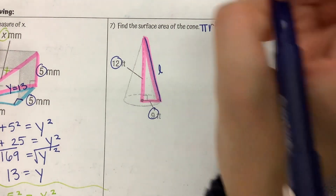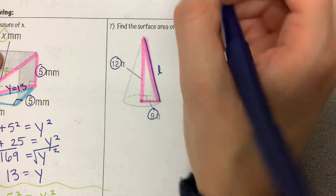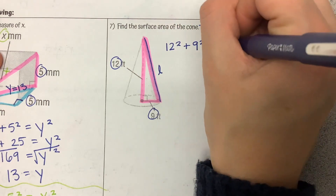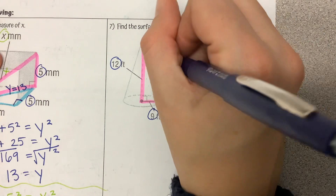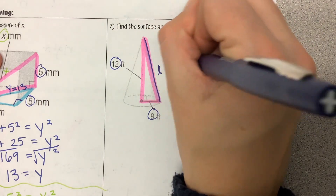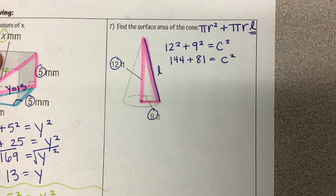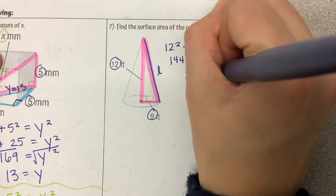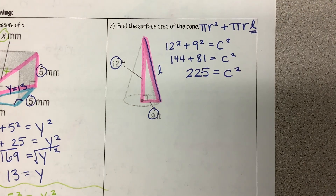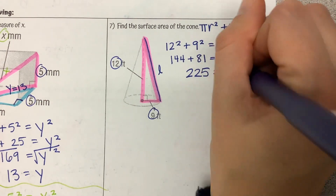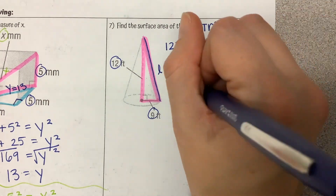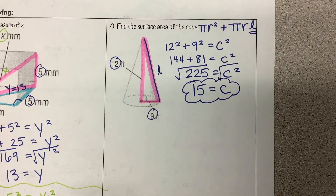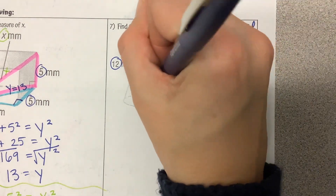I'm going to plug into the formula: A squared plus B squared equals C squared. So 12 squared plus 9 squared equals C squared. 144 plus 81 is equal to C squared. 225 is equal to C squared. Last step — we're finding that square root. The square root of 225 is 15. So that's part one: we found that L is equal to 15.